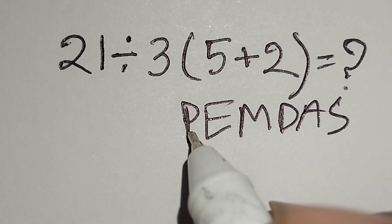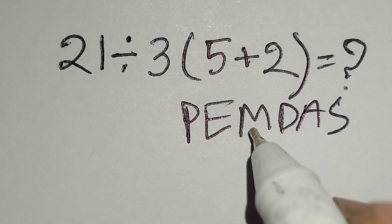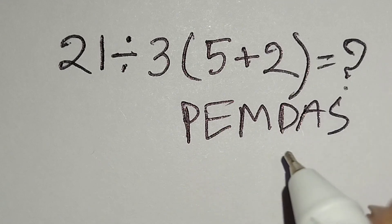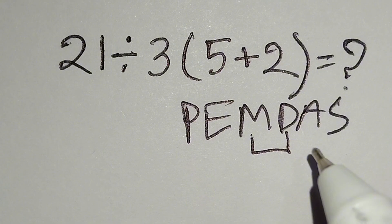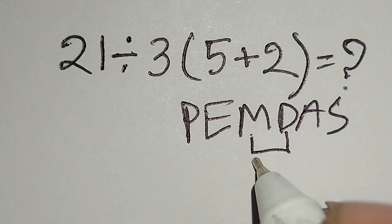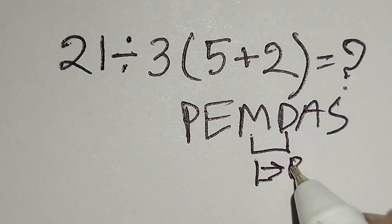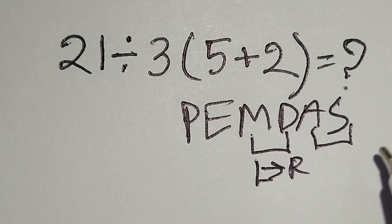we have to work with parenthesis, then exponent, then multiplication or division, then addition or subtraction. Remember, multiplication and division have same priority, we work left to right. Addition and subtraction have same priority, we also work left to right.